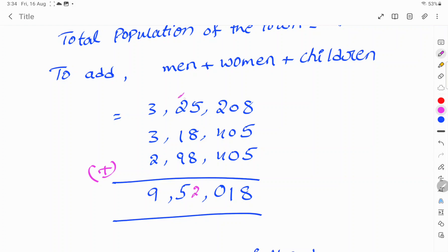And again, 2 plus 1 is 3, plus 2 is 5. 5 plus 9 is 14, write 4 and 1. 6 plus 1 is 7, plus 2 is 9.